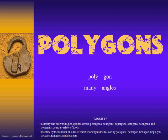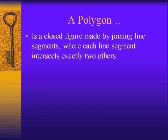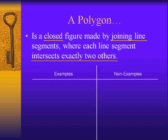From the Greek language, polygon literally translates to many angles. By definition, a polygon is a closed figure made by joining line segments, where each line segment intersects exactly two others. Remember, it's closed, and the joined lines intersect exactly two others. Keep that in mind as we sort several examples and non-examples.